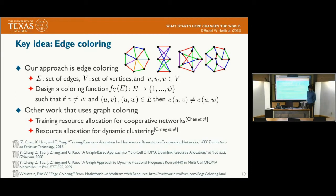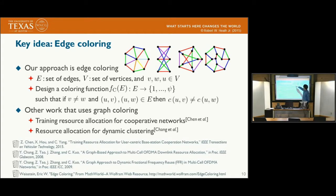As a key idea, we adopt edge coloring from graph theory. Edge coloring simply allocates a color to a graph so that there is no vertex that shares two edges of the same color. For example, these are results of the edge coloring, and we can easily observe that there is no vertex that shares two edges colored by the same color.